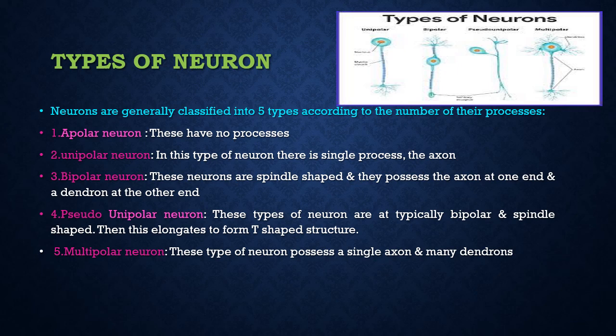Next we move on to types of neuron. Neurons are classified into many types and in many ways. First is classification of neuron based on the process. First one is apolar neuron — apolar neuron means the neuron which does not have any process. If it does not have any process, then it is said to be apolar neuron.